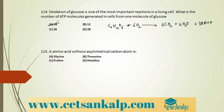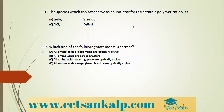Q: Amino acid with an asymmetric carbon atom — the only optically inactive amino acid is glycine, because it has two hydrogens on its alpha carbon (no chiral center). All other amino acids are optically active. Q: Species best serving as initiator for cationic polymerization: AlCl3 — a Lewis acid (electron pair acceptor) that generates a cation, initiating cationic polymerization.